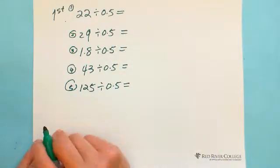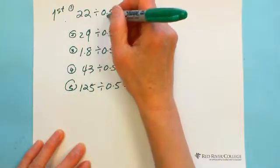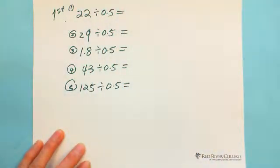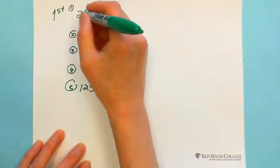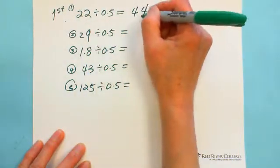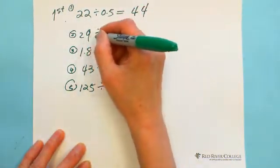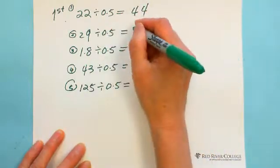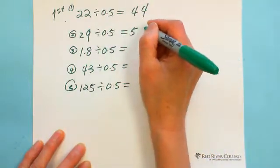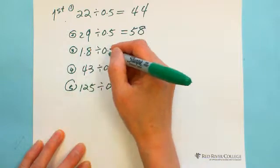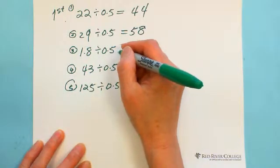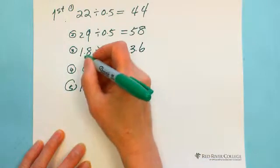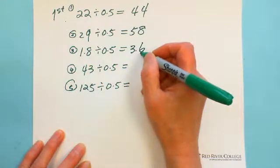We follow a very easy pattern: divided by 0.5 is actually multiplied by 2. So 22 divided by 0.5 gives you 44. 29 divided by 0.5 equals multiplied by 2, which is 58. 1.8 divided by 0.5 is 3.6, just using 1.8 multiplied by 2.